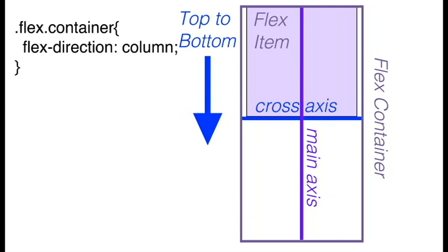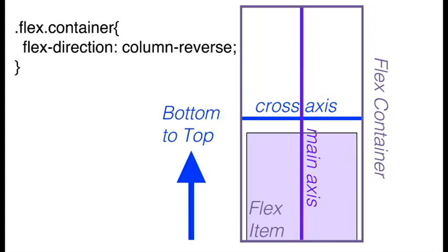Please note that our main axis is vertical for column and column-reverse. When we set flex-direction to column-reverse, our main axis is vertical and our cross axis is horizontal. The flow of our flex items will be from bottom to top along the main axis.